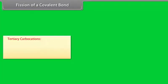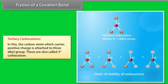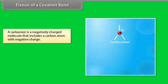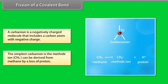Tertiary carbocations have the positively charged carbon attached to three alkyl groups — also called third-degree carbocations. A carbanion is a negatively charged molecule with a carbon atom bearing a negative charge. The simplest carbanion is the methide ion, which can be derived from methane by loss of a proton.